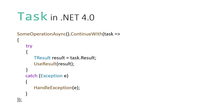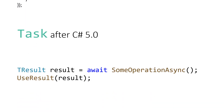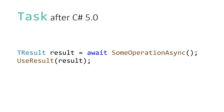When .NET 4 came along, the Task Parallel Library, or TPL, was introduced. Here we have a method named SomeOperationAsync that returns a task. Back then we had to supply a callback to be called after the method completes. After C# 5 came along, Microsoft introduced async and await and revolutionized the way of doing asynchronous operations.